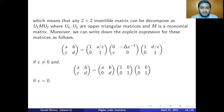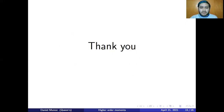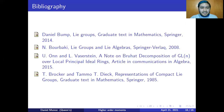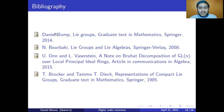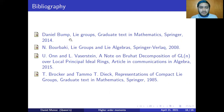That will be everything from my presentation. Thank you very much. Here is my list of references. The first one, the Lie Groups book by Daniel Bump, is where I got most of the proofs. In this book you can find almost all the proofs of the main theorem. If you want to look at the complete proof, you may want to check this book. That will be all for today — thank you very much, and I hope you enjoyed the presentation.